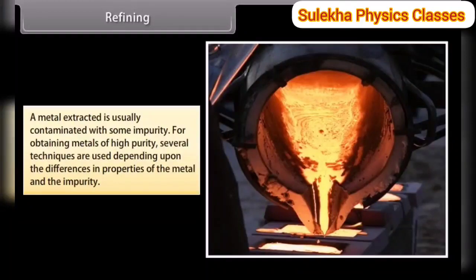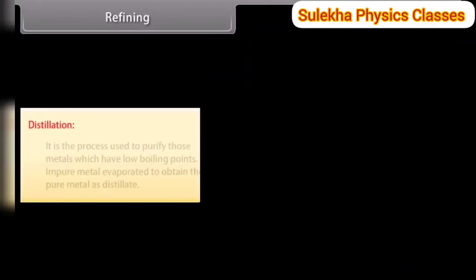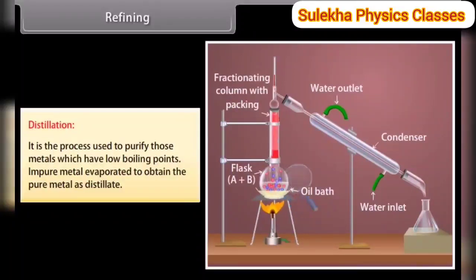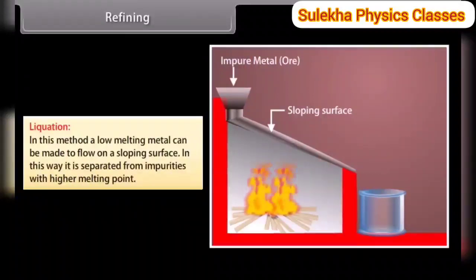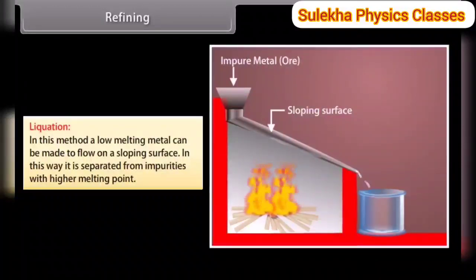Refining. A metal extracted is usually contaminated with some impurity. For obtaining metals of high purity, several techniques are used depending upon the differences in properties of the metal and the impurity. Distillation is used to purify metals with low boiling points — impure metal is evaporated to obtain pure metal as distillate; for example, zinc and mercury. Liquidation: a low-melting metal is made to flow on a sloping surface and separated from impurities with higher melting points; for example, tin.